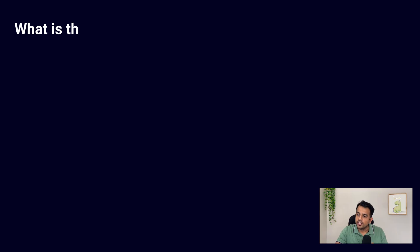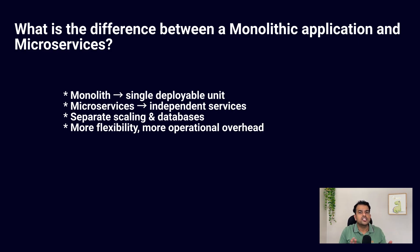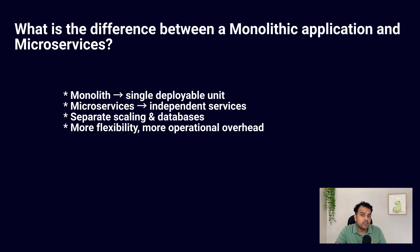The next question is: what is the difference between a monolithic application and microservices? In a monolithic application, the entire application is packaged and deployed as one single unit. All modules share the same codebase, same deployment, and same database. In microservices, each service is independent — it has its own deployment, own scaling, and own database. Microservices give you more flexibility, but they require better monitoring, communication handling, and DevOps support, which is why microservices are more complex to manage.